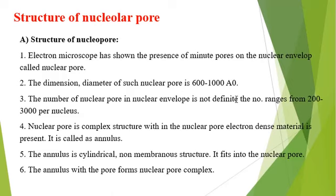The number of nuclear pores in the envelope is not a definite number; it ranges from 200 to 3000 per nucleus. The nuclear pore is a complex structure. Within the nuclear pore, electron-dense material is present, called the annulus. This is known as the nuclear pore complex.